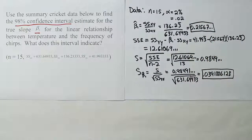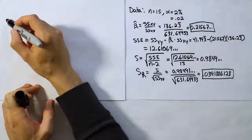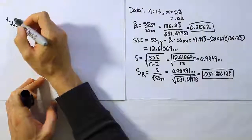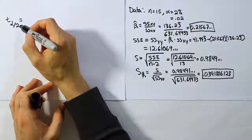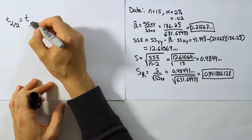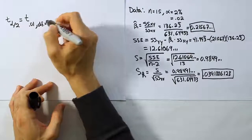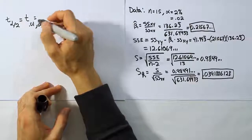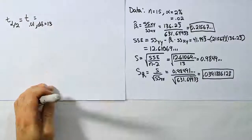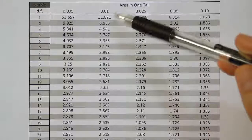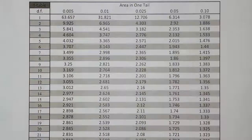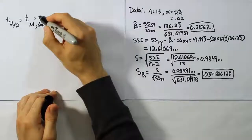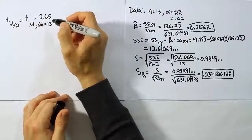Now we move to step two: getting our critical value. T alpha divided by 2, in our case, is T.01 with degrees of freedom N minus 2, which is 13. Going to the t-table at the 0.01 column with 13 degrees of freedom gives us a critical value of 2.65.